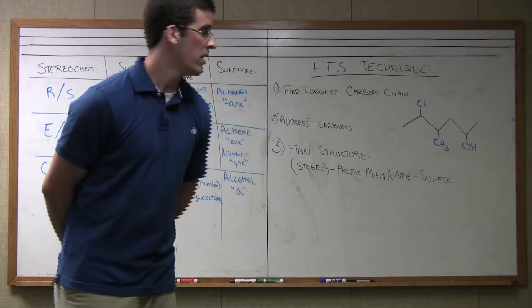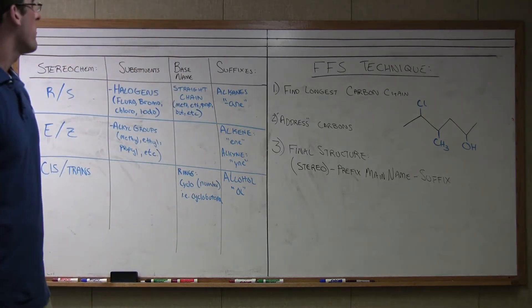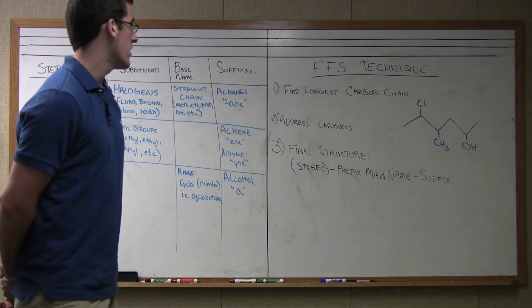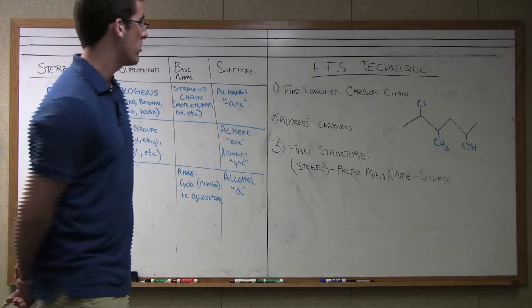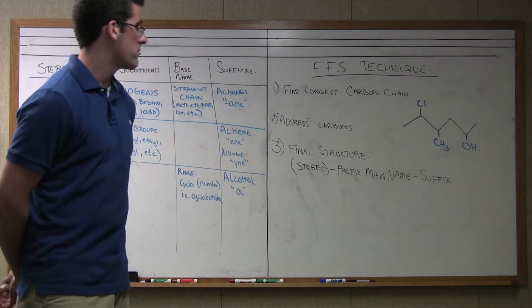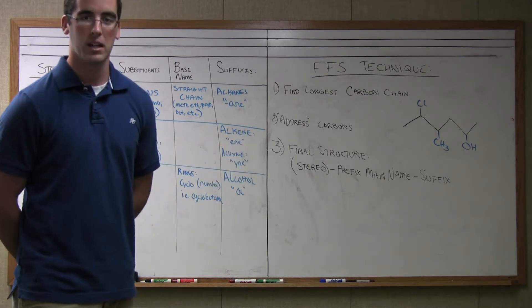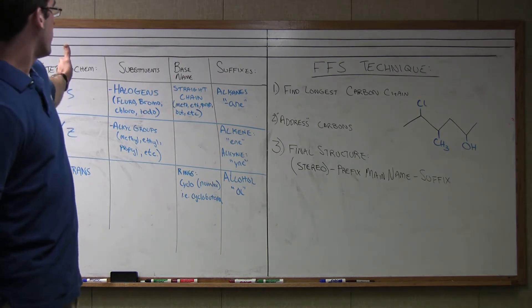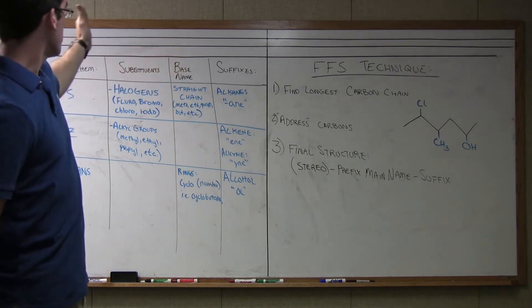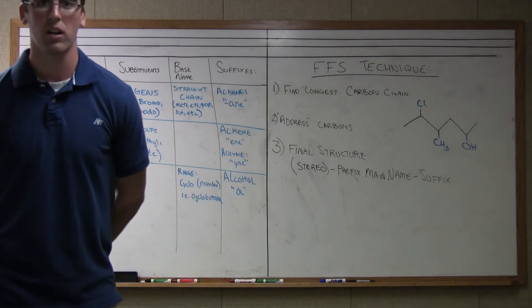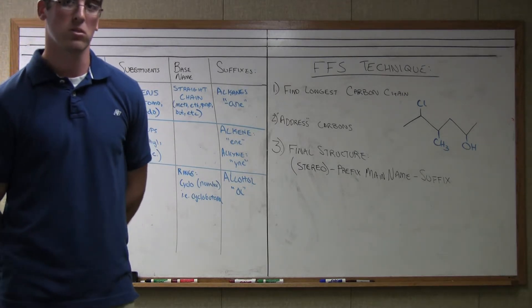So as you can see we have the FFS technique which is three steps to identifying the compound we're going to be naming and then how to actually execute that and get to the final structure at the bottom of step three there and how to actually come about the name. We look at our table here. We have four suffixes here: the stereochemistry, the substituents, the base name, and the suffixes. Just check the chart in the course pack because it's much more in detail.